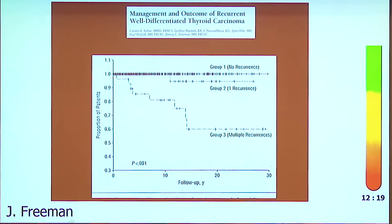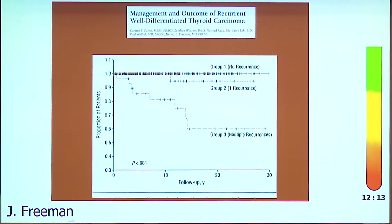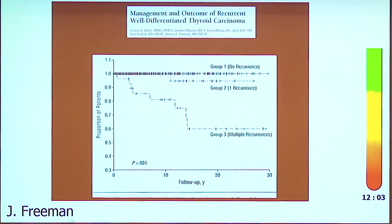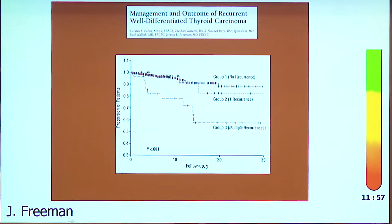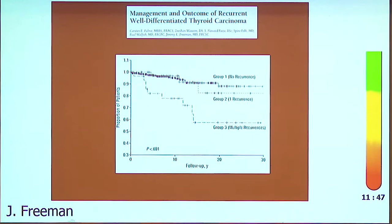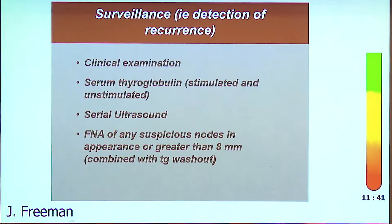Here are our survival results in a large group of patients with no recurrence, one recurrence, and two recurrences. The more recurrences you get, the worse it is — recurrences beget recurrences. This holds for disease-specific survival as well: group one, no recurrence; group two, one recurrence; group three, multiple recurrences. Once you go down that slippery slope, it's worse every time. So it's better to deal with recurrences optimally at the first go.